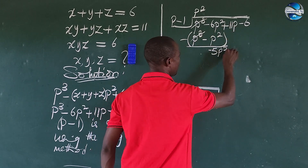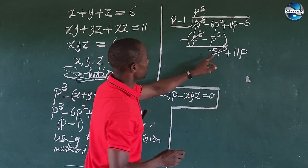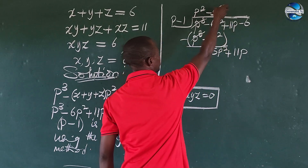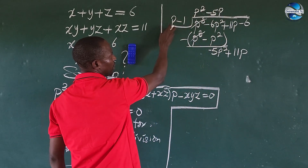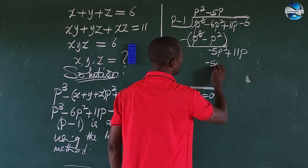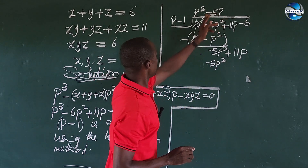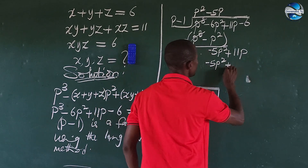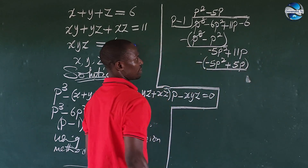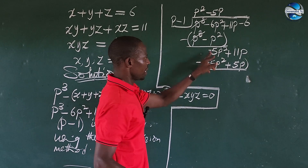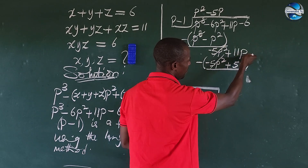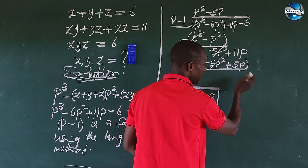Bring down the next term, plus 11P. Dividing P into minus 5P squared gives minus 5P. Multiplying minus 5P by P minus 1 gives minus 5P squared plus 5P. Subtracting: minus 5P squared plus 5P squared leaves nothing; then 11P minus 5P gives us plus 6P.